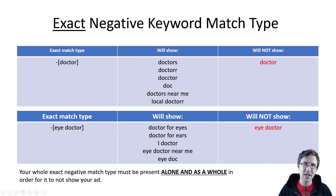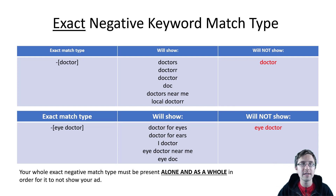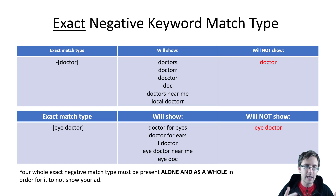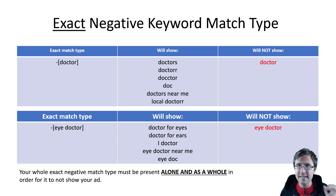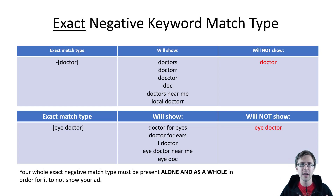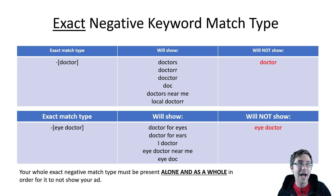Exact negative keyword match type means that your exact keyword term must be written by the user in order for your ad to not show. So if you're an ear doctor and you don't want your ad to show up for anyone just typing in 'doctor', you would use this exact keyword match type. As you can see, it's in square brackets which means it's exact, and it has a negative sign before it. So if you have 'doctor' as an exact negative match type and someone types in 'doctor', your ad will not show.